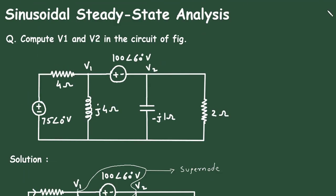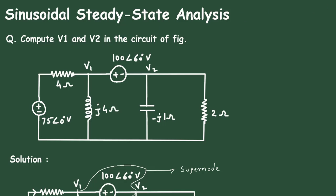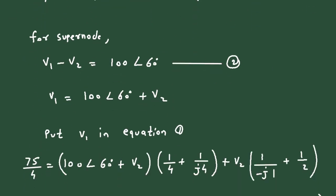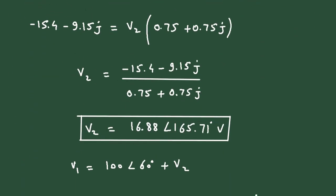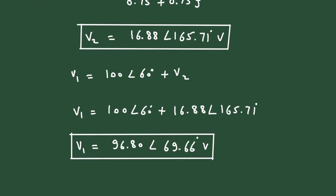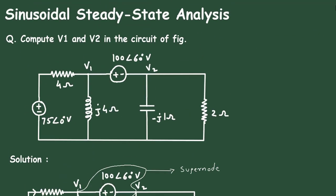So this is the value of V1 and this is the value of V2. This is how we can find V1 and V2 by using nodal analysis. Don't forget to check out the other videos on this channel. Thanks for watching. Bye.